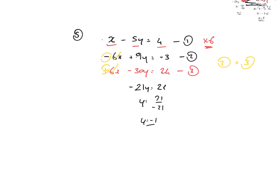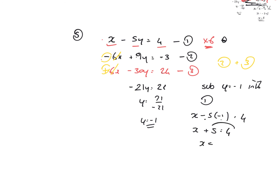I'm now going to substitute y equals minus 1 into equation 1. Where I see y I'll replace it with minus 1: x minus 5 lots of minus 1 equals 4. Minus 5 times minus 1 is plus 5, so x plus 5 equals 4. Bringing that across, x equals 4 minus 5, and x is equal to minus 1.